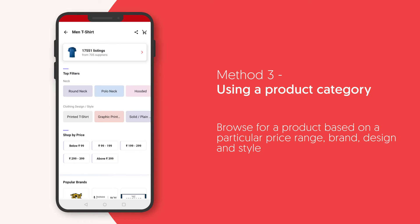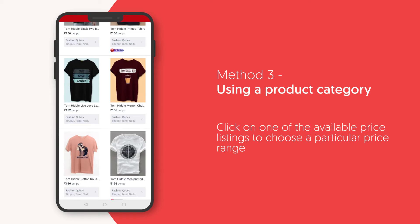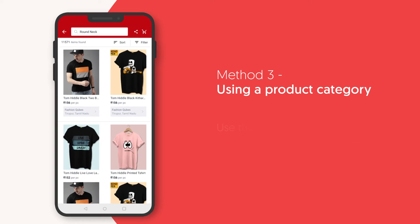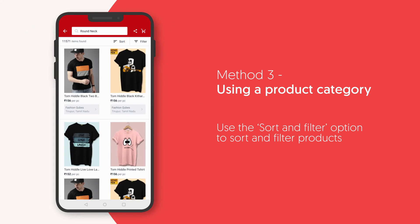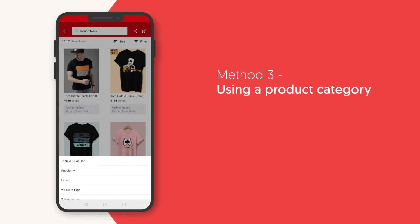You can browse for a product based on a particular design and style, price, or brand from the listings. For example, if you wish to browse for listings based on a particular price, click on one of the available price listings in the price category. This will show your products within the selected price range. When you click on any design or price range, you will see the listings where you can also sort and filter products using the sort and filter option. Sorting can be done by clicking on the options to change the order of the listings. For example, you can browse for a product based on popularity. This will show you listings that match the sorting criteria that you have set.